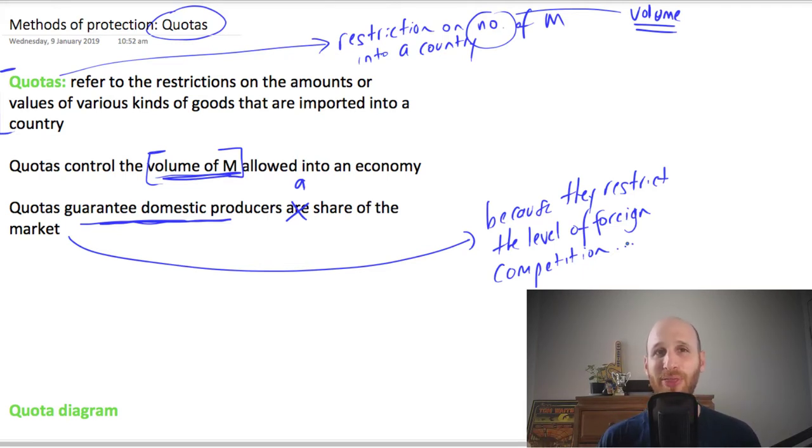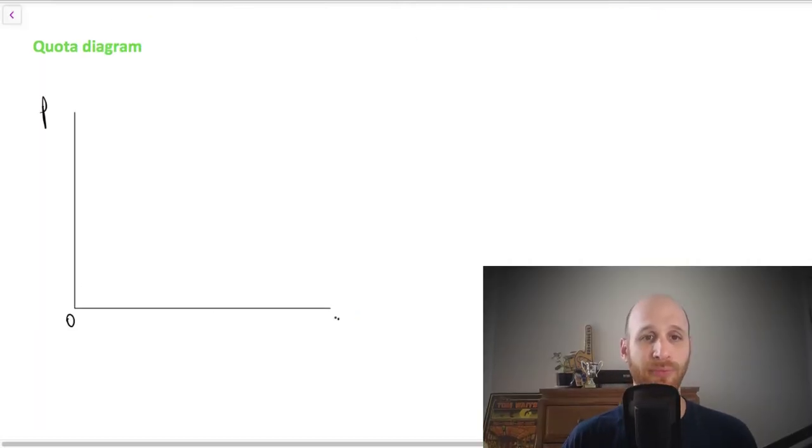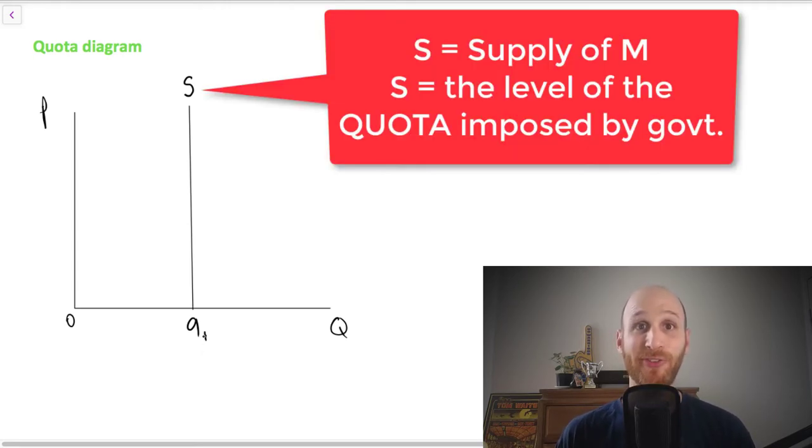So let's have a think about how this works in terms of a diagram. What we've got with a quota is a supply curve that is totally vertical because the level of supply, the level of imports is fixed, right? It is fixed at this level.